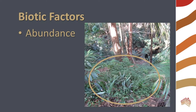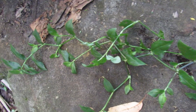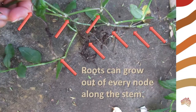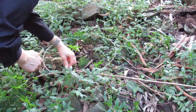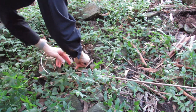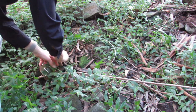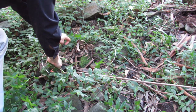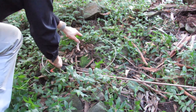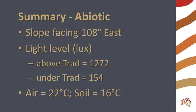Determining the abundance of Tradescantia is difficult because it grows in runners along the ground. Roots can grow out of every node along the stem. For this reason, I counted the number of growing tips inside my circle in order to determine the abundance of this plant. I made five measurements of light levels, temperatures, and abundance, then took the averages.